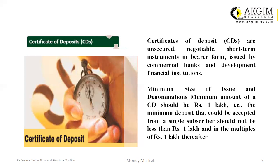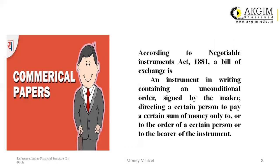The next instrument of the money market is the commercial bill. According to the Negotiable Instruments Act 1881, a bill of exchange is an instrument in writing containing an unconditional order signed by the maker, directing a certain person to pay a certain sum of money only to the order of a certain person or to the bearer of the instrument. When goods are sold on credit, the seller draws a bill of exchange on the buyer for the amount due. The buyer accepts it immediately, agreeing to pay the amount mentioned therein after a specified date. After accepting the bill, the buyer returns it to the seller. This bill is called a commercial bill or a trade bill.